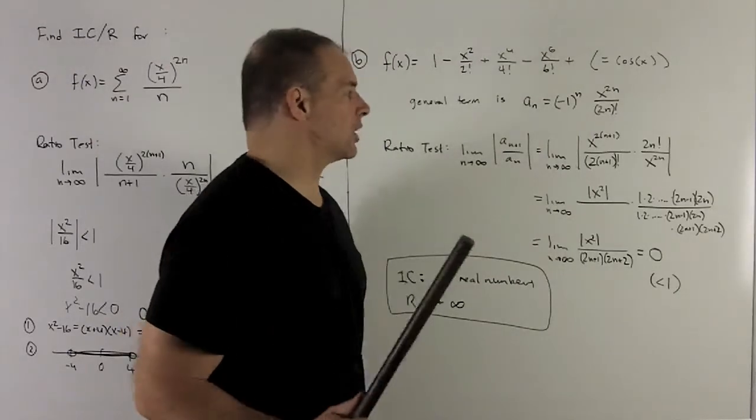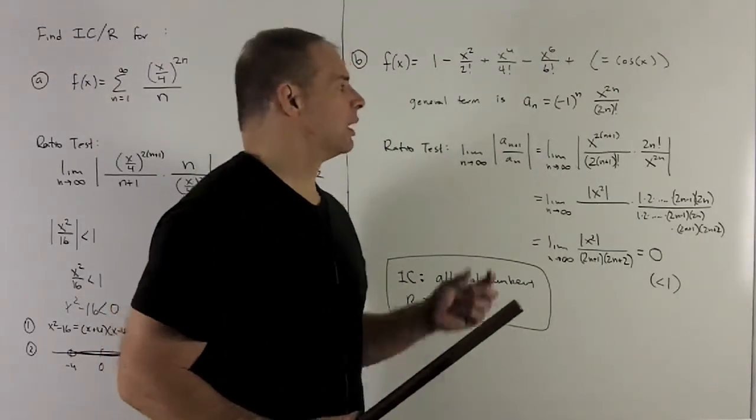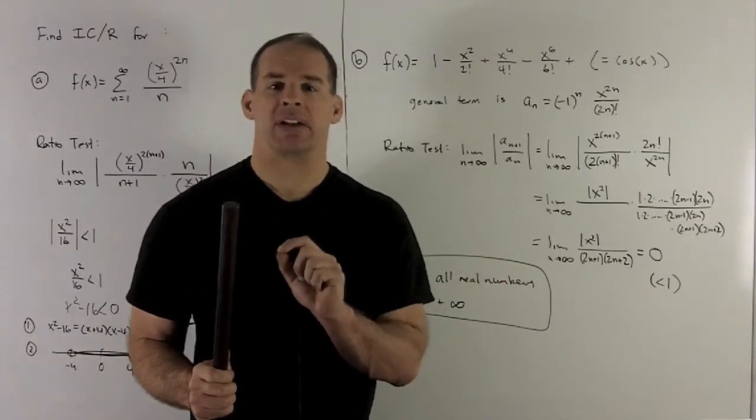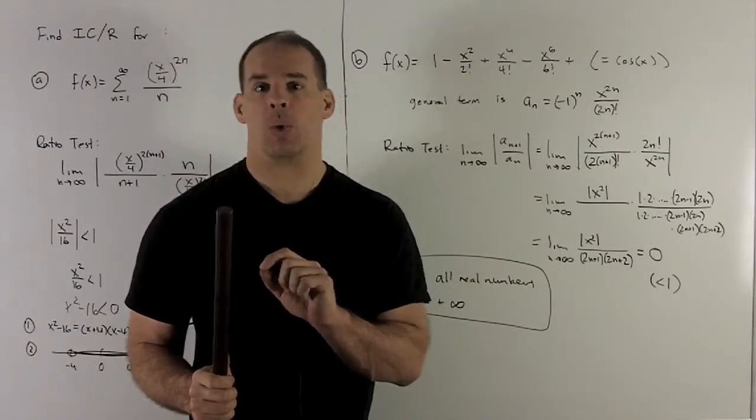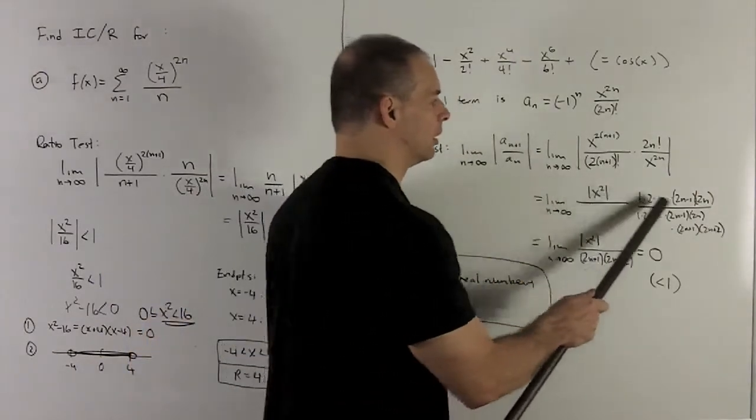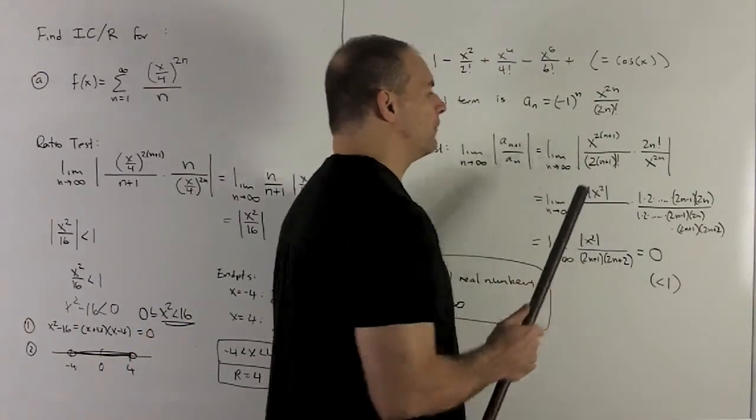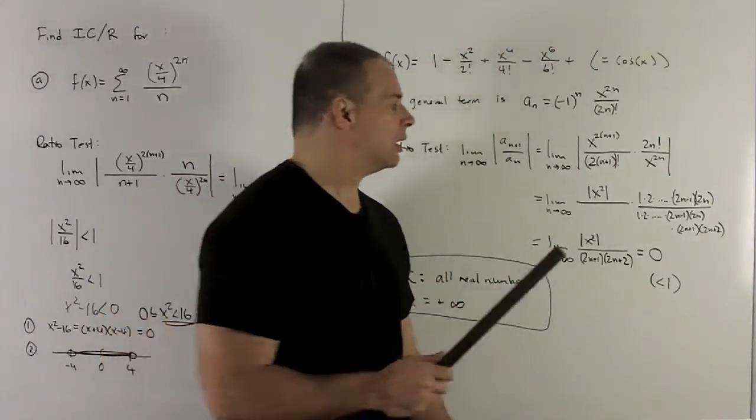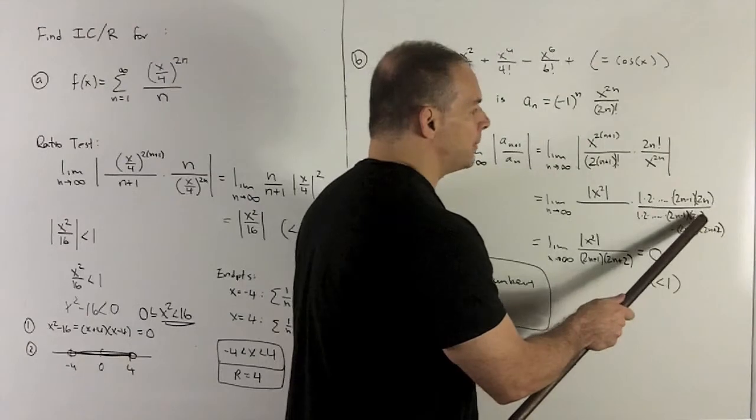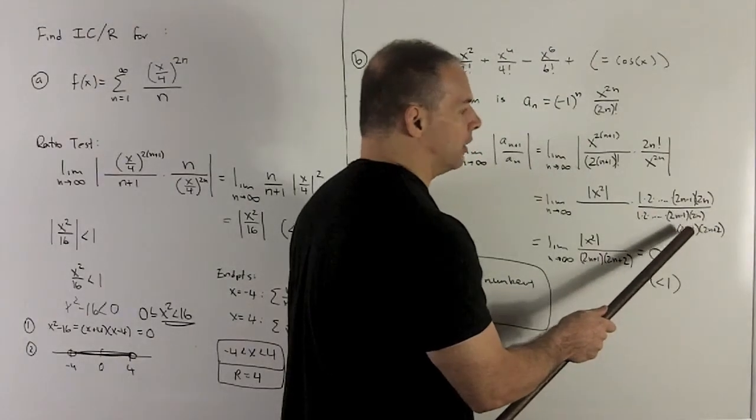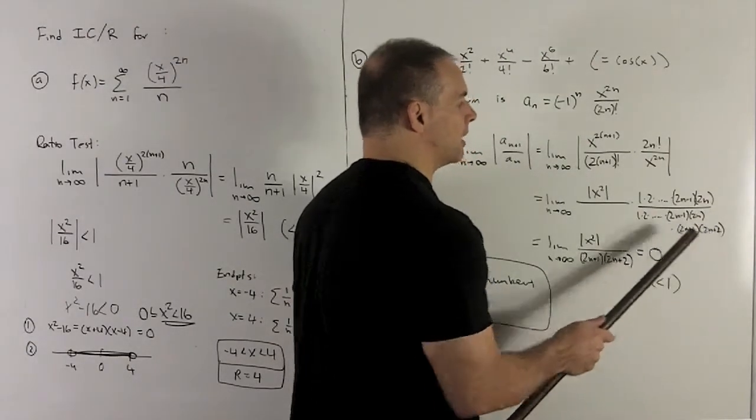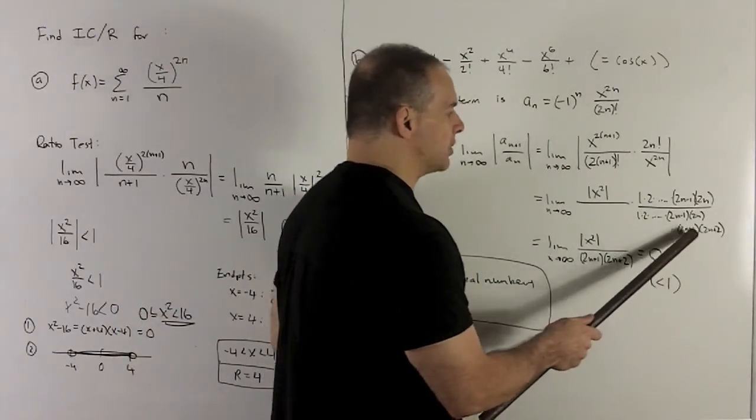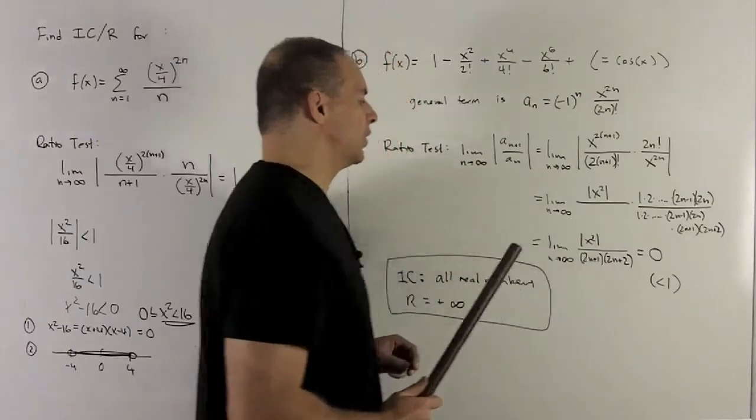For the factorials, let's recall what factorial means. n factorial means multiply all numbers 1 through n. So 2n factorial is going to mean multiply all numbers 1 through 2n. For 2n plus 2 factorial, same idea. You multiply all numbers from 1 through 2n plus 2. So we're going to go 1 all the way up to 2n, but I have to add on 2n plus 1 and 2n plus 2. So when we do our cancellation, the only thing that winds up in the bottom is going to be 2n plus 1, 2n plus 2.